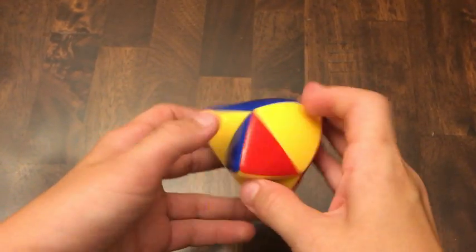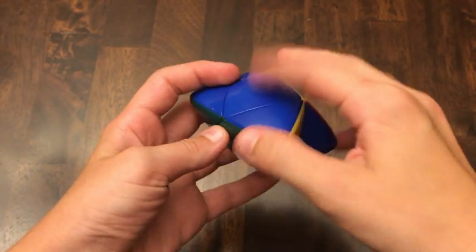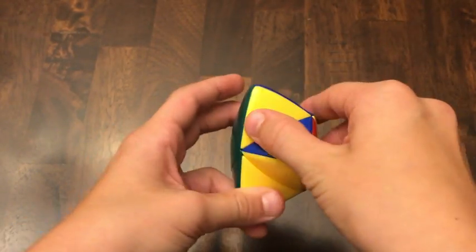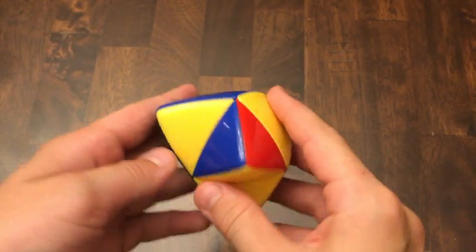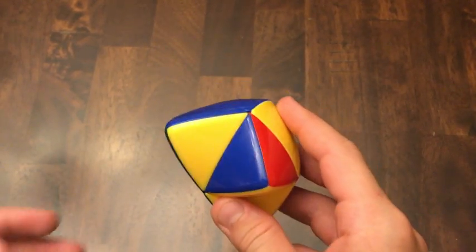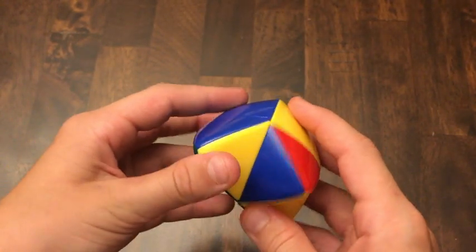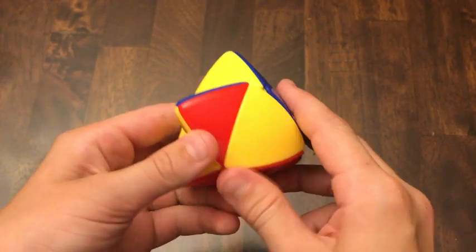So basically, the second case you could run into is where you have two correctly permuted and two incorrectly permuted. So when I'm dealing with this case, you just redo this one step multiple times over until it fixes. So what we want to do is just make this layer right here, or this layer right here into the bottom layer.